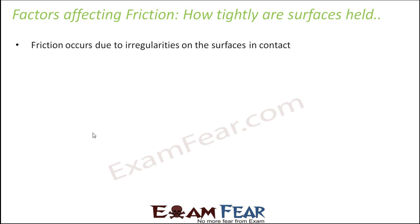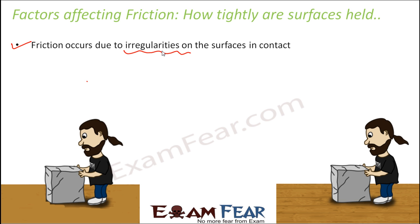Friction occurs due to irregularities on the surfaces in contact. Let us take an example — suppose you have a box and you try to move the same box first on a smooth surface and then on a rough surface. In which surface do you find it easier to move the box? Obviously on the smooth surface, because here friction is less, so you do not need to apply a lot of force. The opposing force is less, so the box moves easily.